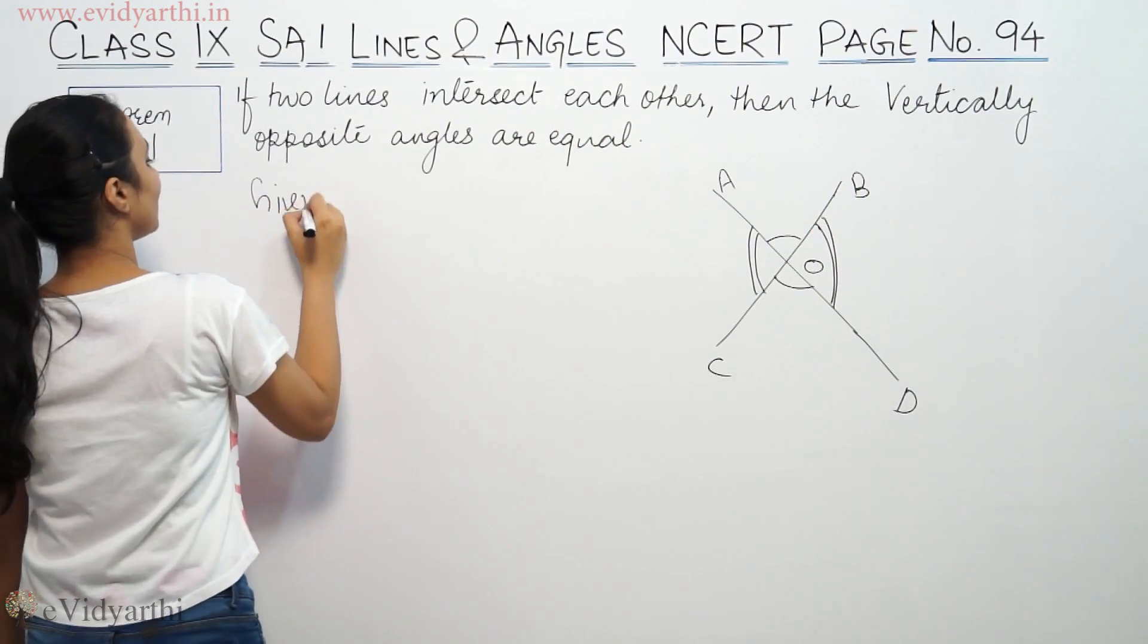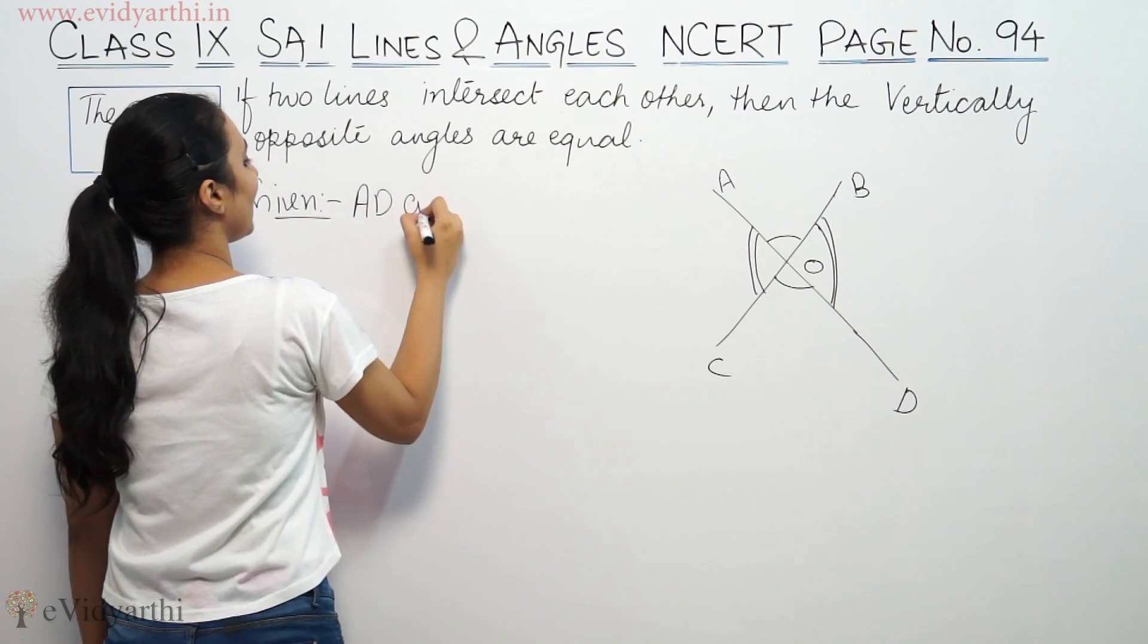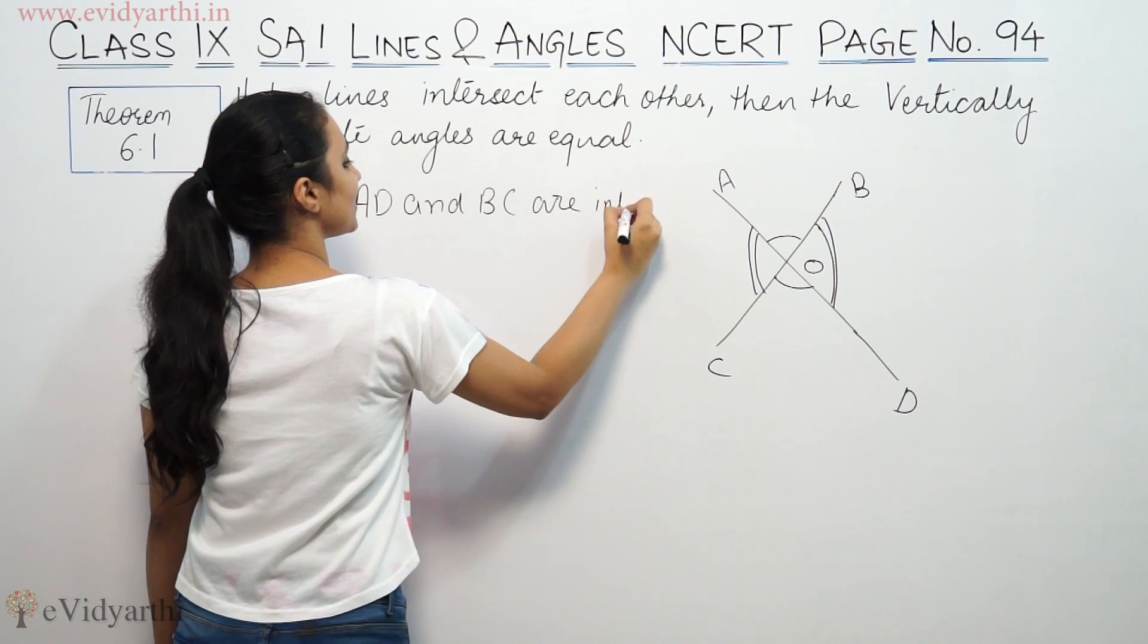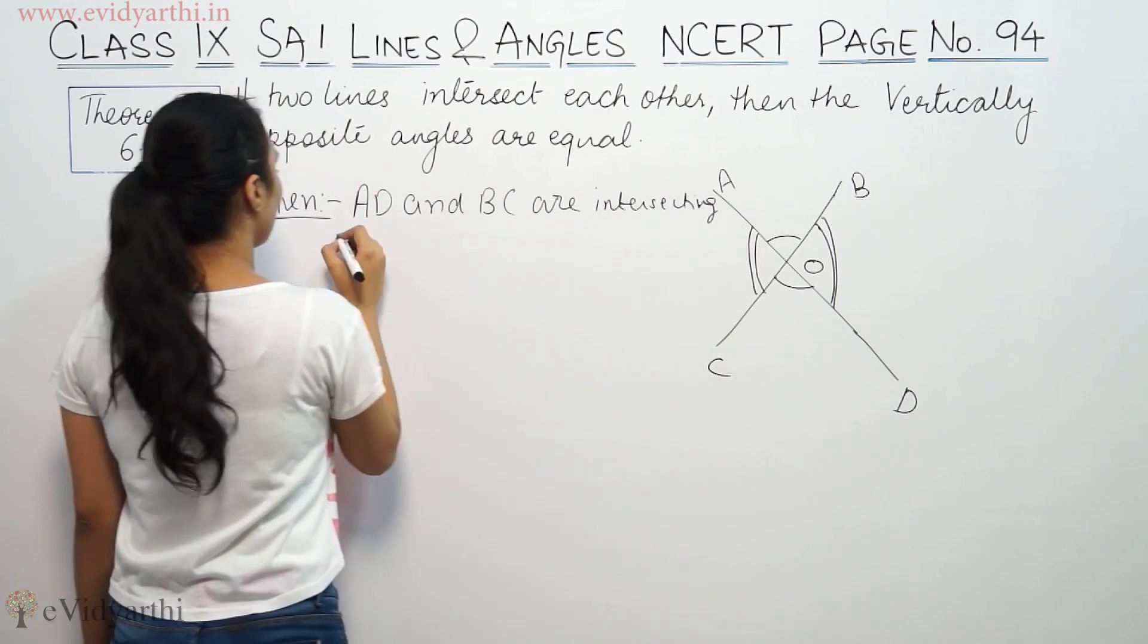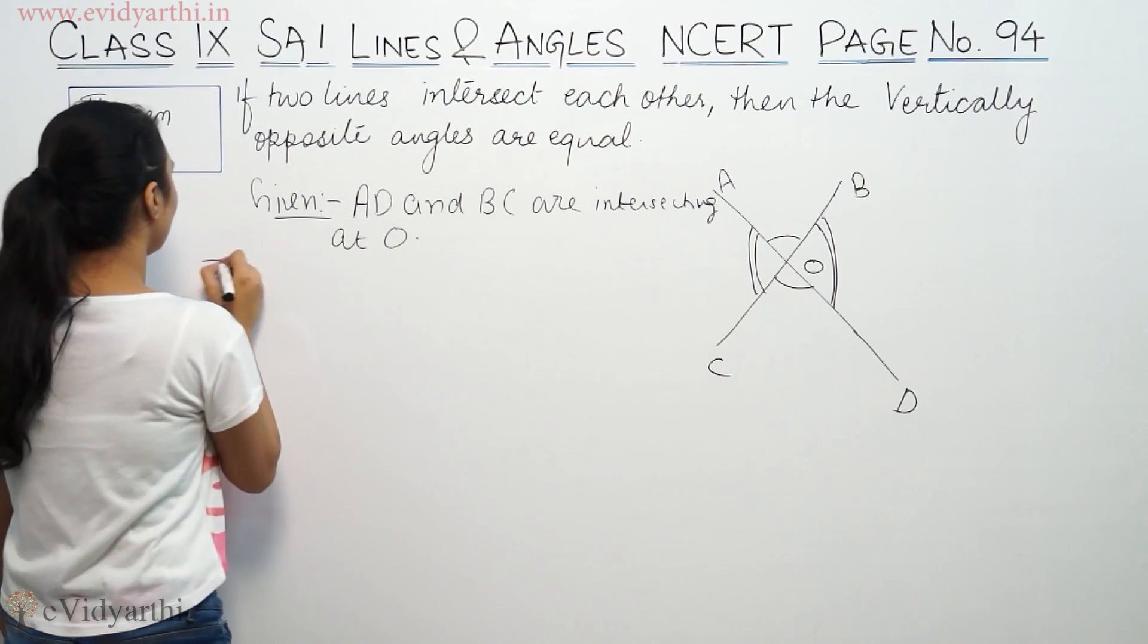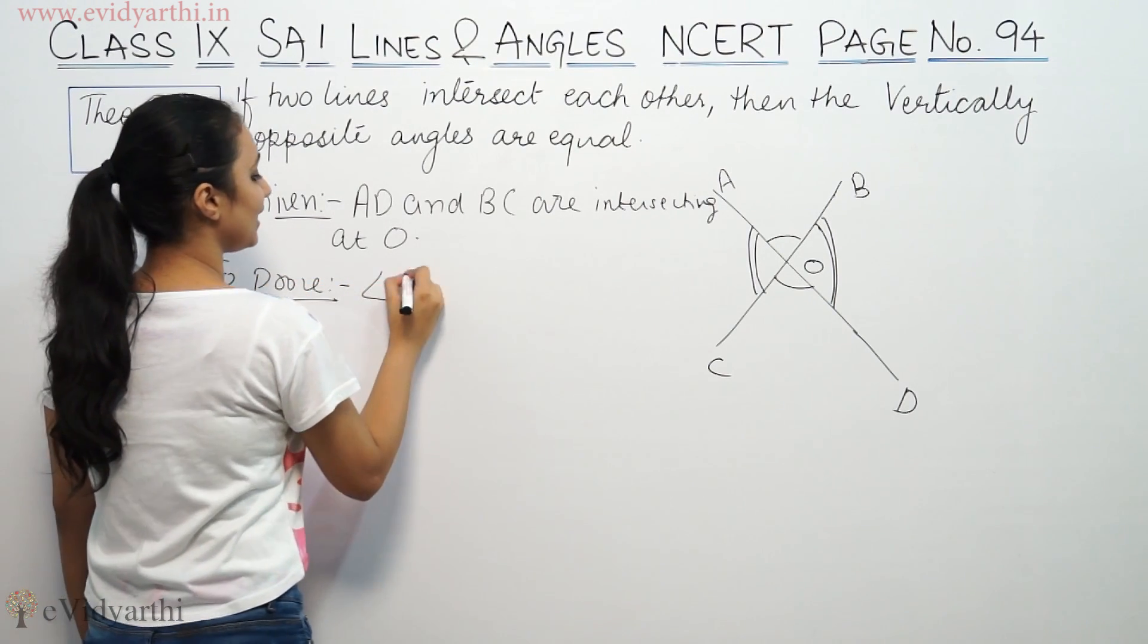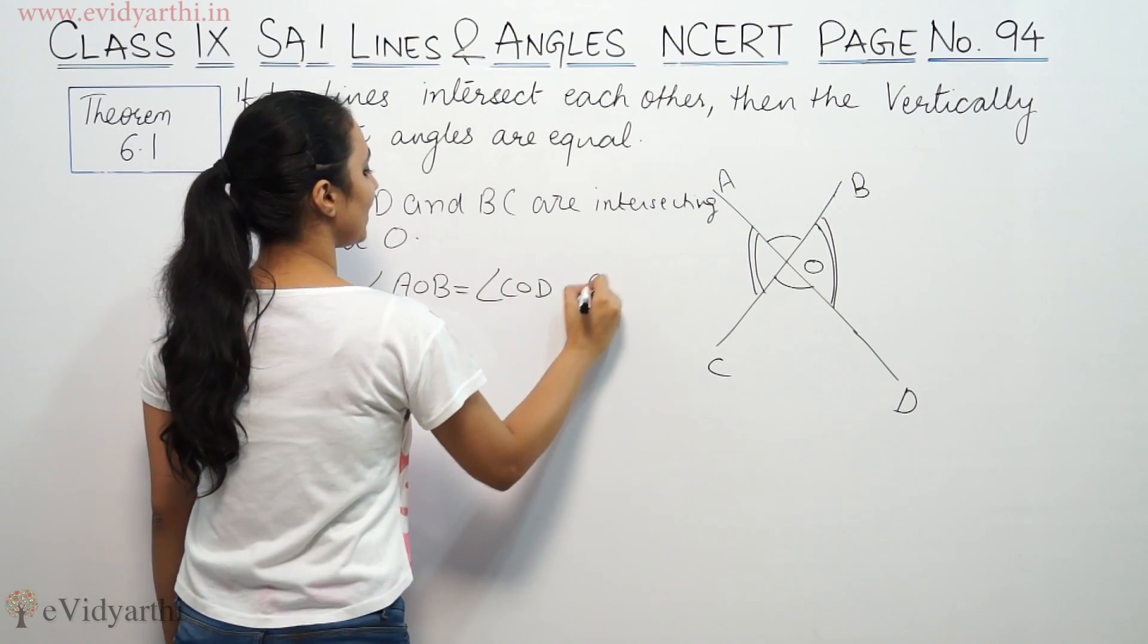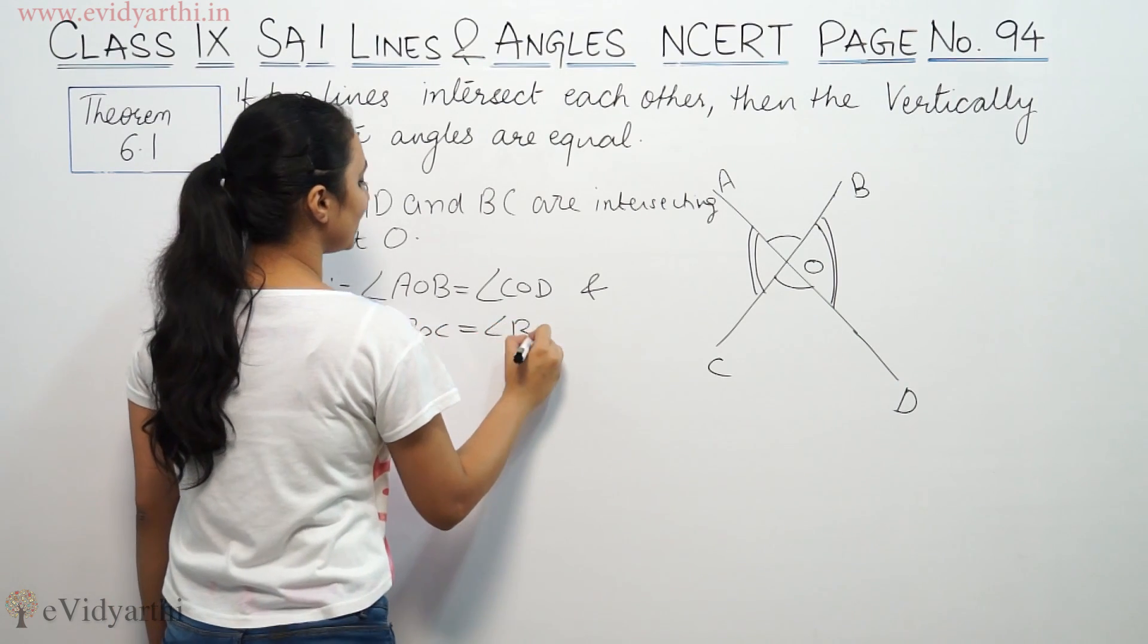So how have given it that AB, I mean AD and BC are intersecting at O. We have to prove that angle AOB is equal to angle COD and angle AOC is equal to angle BOD.